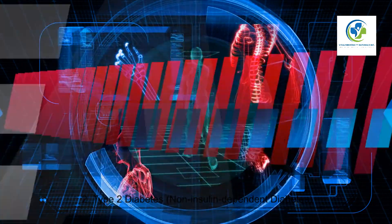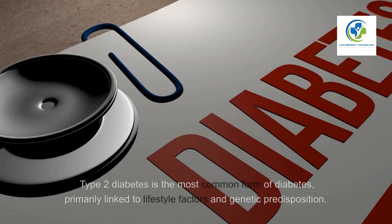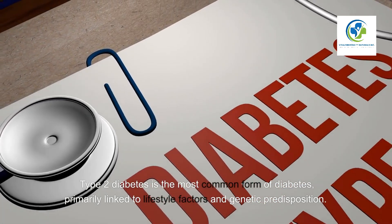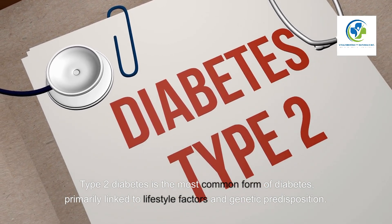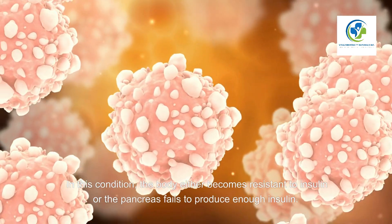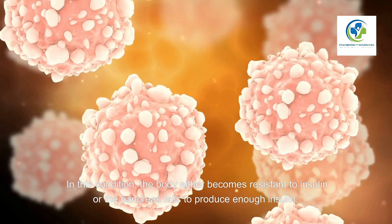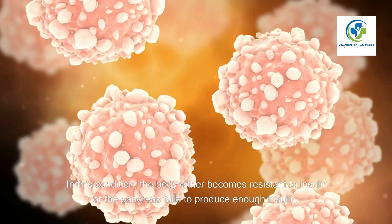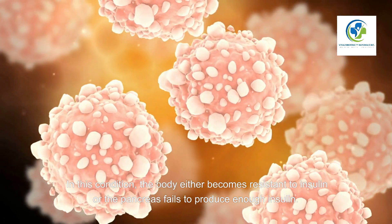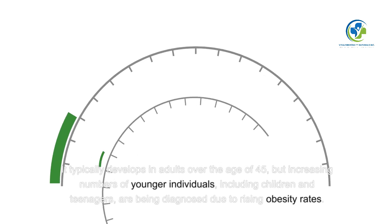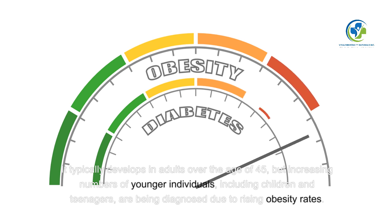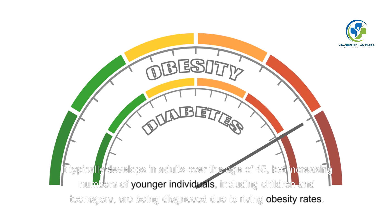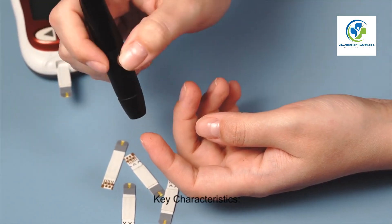Type 2 diabetes, or non-insulin dependent diabetes, is the most common form of diabetes, primarily linked to lifestyle factors and genetic predisposition. In this condition, the body either becomes resistant to insulin or the pancreas fails to produce enough insulin. It typically develops in adults over the age of 45, but increasing numbers of younger individuals, including children and teenagers, are being diagnosed due to rising obesity rates.